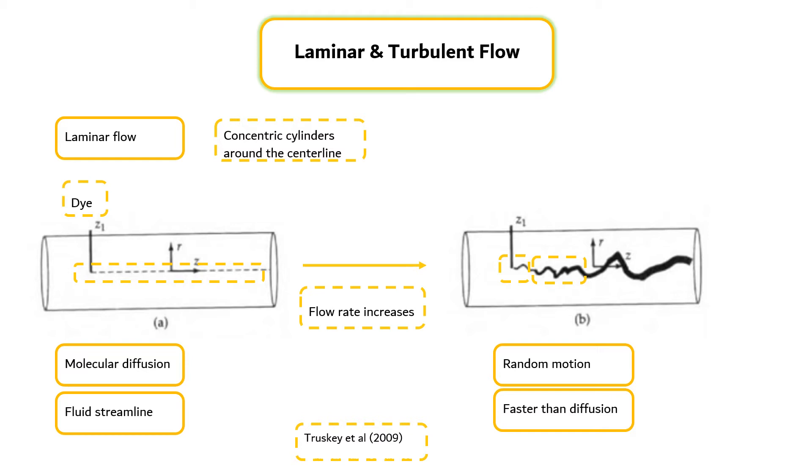As the fluid rate increases further, however, the intermittent, random, and chaotic behaviors of the dyes becomes more common until the behavior is completely chaotic as shown in the right figure. Dyes disperse throughout the entire radius of the tube.